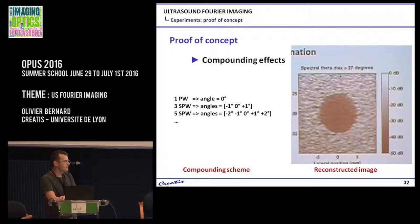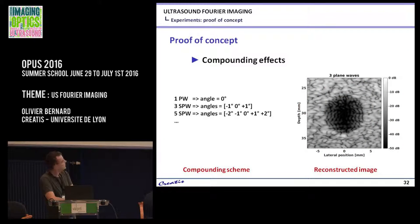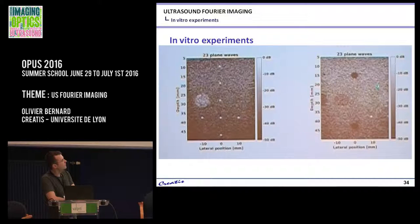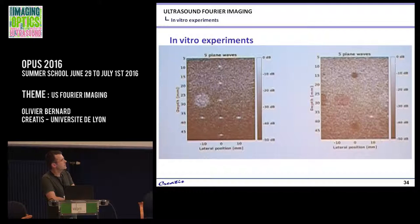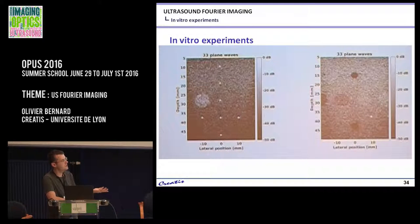From the compounding results, some angles beyond a certain range don't change anything anymore — likely because the transducer cannot send energy at very high angles, so you cannot have, say, a 30-degree compound wave. In the in vivo image you can see that the edge regions are worse than the center, which is the effect of the compounding: all the steered plane waves illuminate the center region, but the edge regions are missed by highly steered plane waves. They haven't tried to optimize this — they just wanted to compare spatial-based versus Fourier-based approaches.